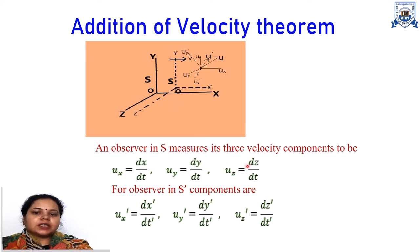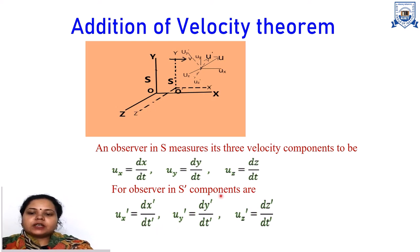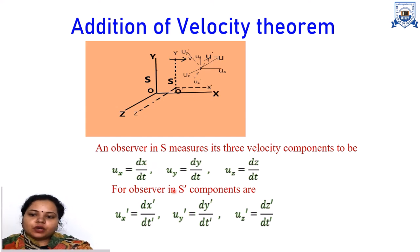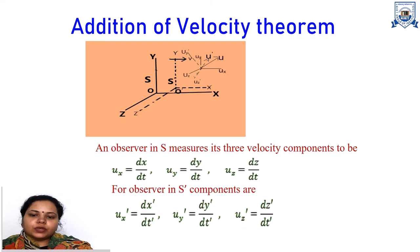An observer in S measures three velocity components: Ux = dx/dt, Uy = dy/dt, and Uz = dz/dt. For an observer in S-dash, the components are Ux-dash = dx-dash/dt-dash, Uy-dash = dy-dash/dt-dash, and Uz-dash = dz-dash/dt-dash. These are simple velocity equations, since velocity is the rate of change of position. Here x, y, z are position coordinates with respect to observer O, and x-dash, y-dash, z-dash are position coordinates with respect to observer O-dash.